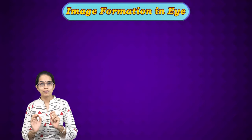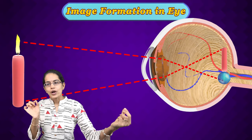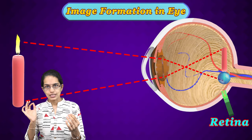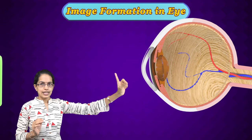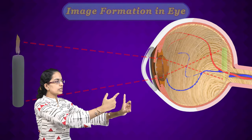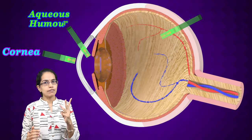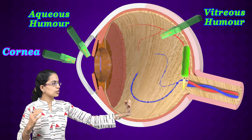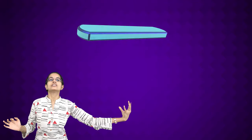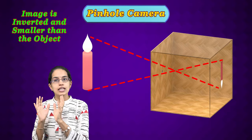Understanding image formation in the eye: a point of light on an object forms a point of light on the retina. If we have a candle, the light rays travel to the eye. Three elements in the eye refract the light: the cornea, aqueous humor, and vitreous humor — and then the image forms on the retina. This image formation is similar to a pinhole camera: the image is inverted and smaller in size.